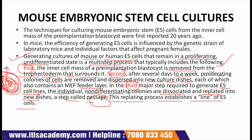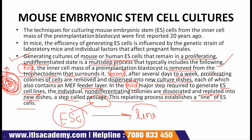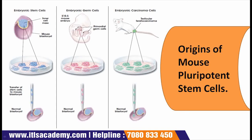The line of cells is clonal if a single embryonic stem cell generates it. If this is our embryonic stem cell and it generates a whole cell line, then it will be known as clonal. In this diagram you can see the origins of mouse pluripotent stem cells are shown.